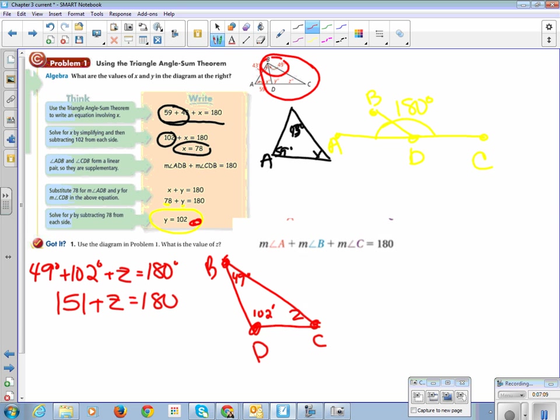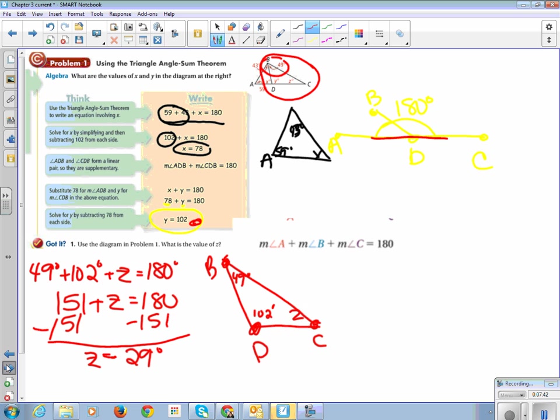And just double check that I've done my math correctly. 49 and 102. 9 and 2 is 11. Carry the 1. 4 and 1 is 5. And then we're going to subtract 151. So we get Z is equal to 180 minus 151. Well, if it was 180 minus 150, it would be 30. But we have one less. Yeah, so it's Z is 29 degrees.